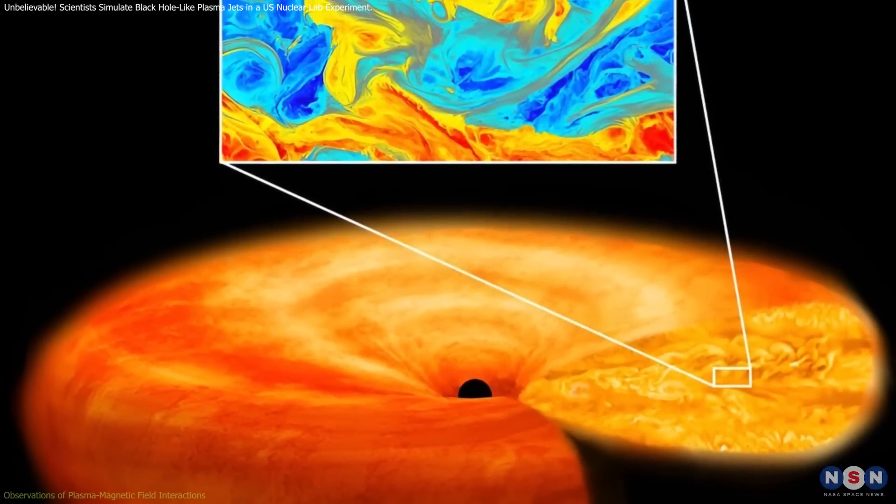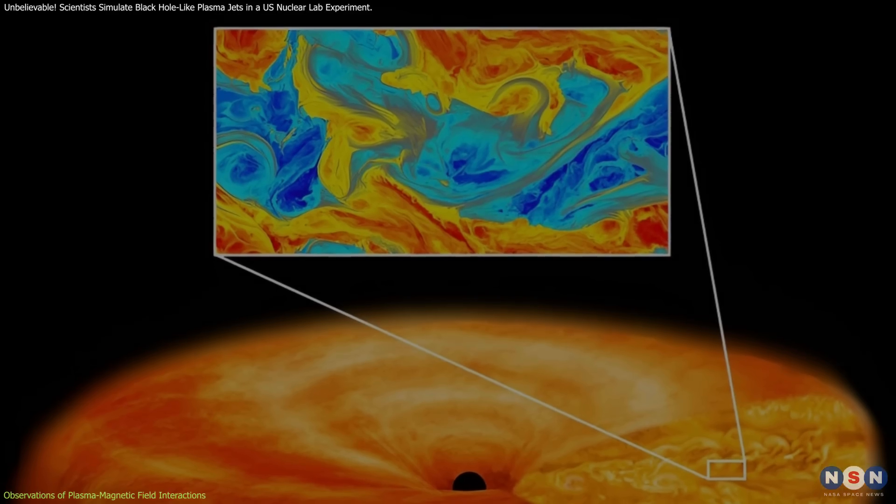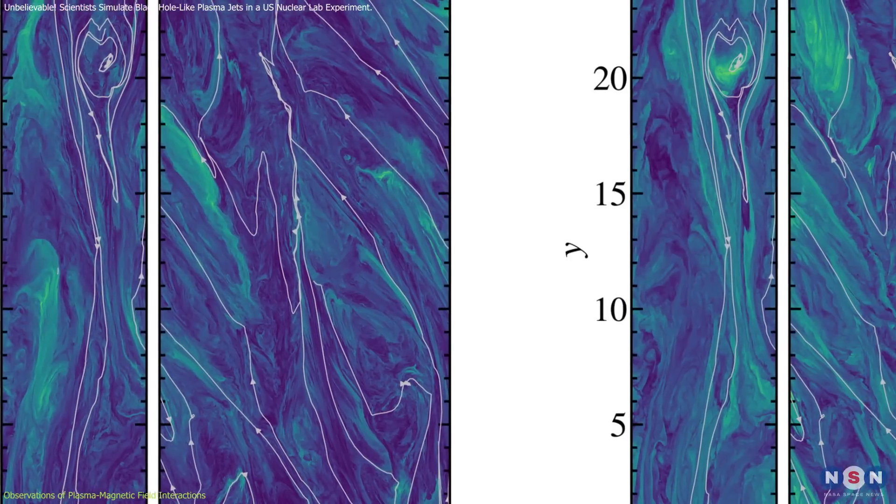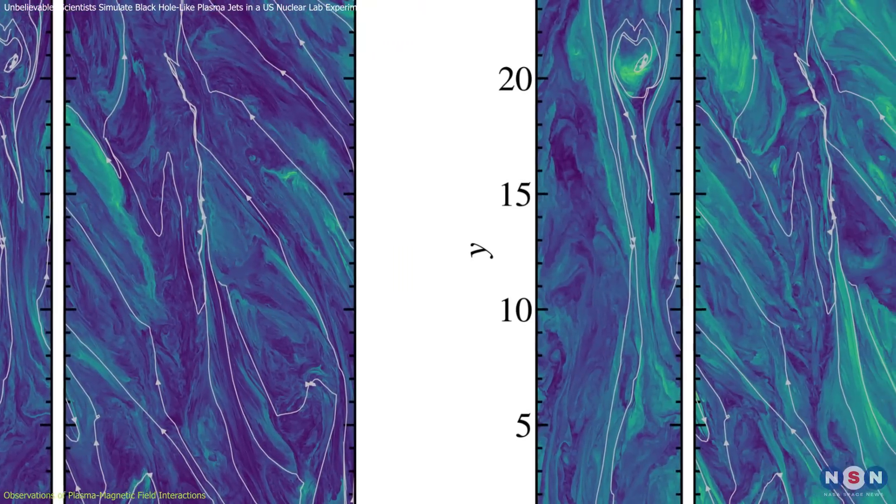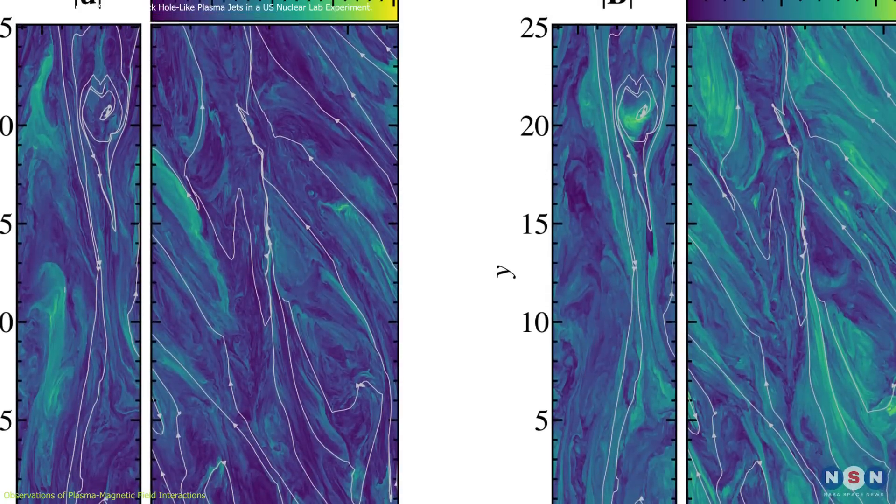During the experiment, the team observed large-scale structures forming as the plasma expanded and interacted with the magnetic fields. These structures, resembling jets, formed due to MRT instabilities. As the plasma's energy diminished, the magnetic field lines snapped back to their original positions, creating straight, narrow formations similar to the plasma jets seen extending from the centers of galaxies.